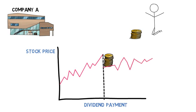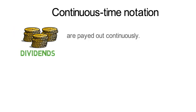For convenience, we work in our video sequence on dynamic asset pricing with the continuous time notation. That implies that dividends are paid out on a continuous basis.